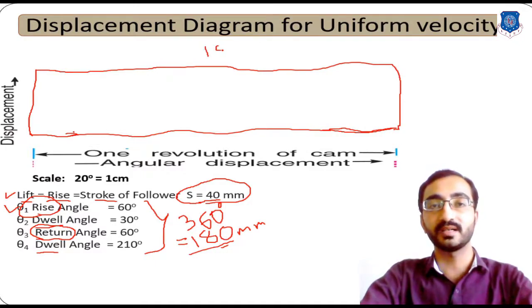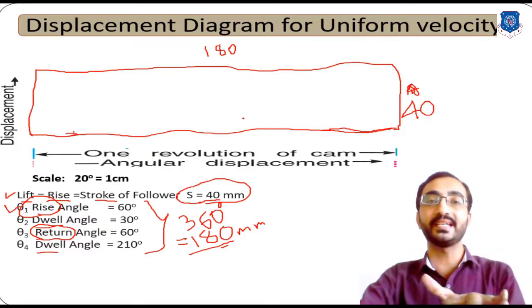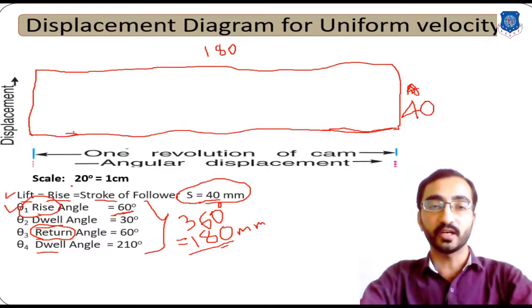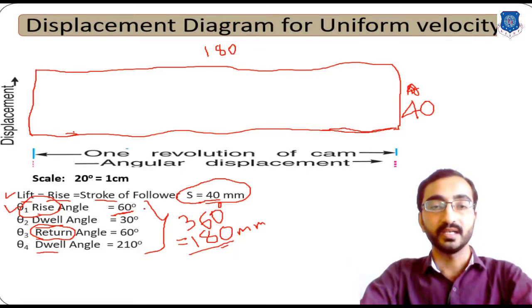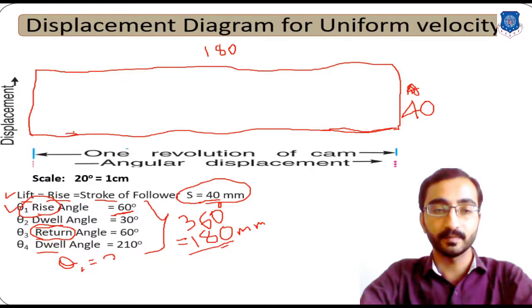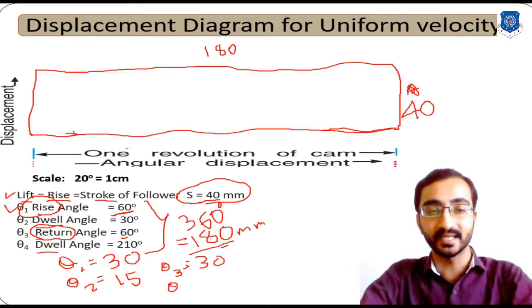Now this 360 degrees is divided into four phases. The first (theta 1, rise) is 60 degrees, represented by 30 mm. The second phase (theta 2, dwell) is represented by 15 mm. The third (theta 3, return) is again 60 degrees, represented by 30 mm. The remaining 210 degrees is the second dwell (theta 4), represented by 105 mm. Adding these: 105 + 15 + 30 + 30 = 180 mm total.